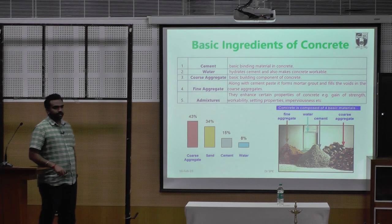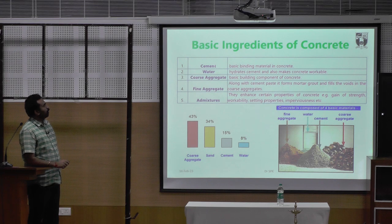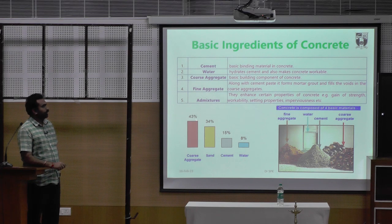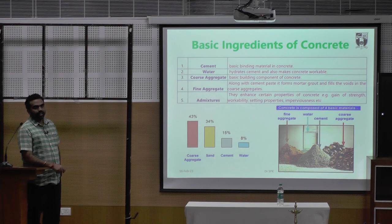The basic ingredients of concrete are cement, water, coarse aggregate, and fine aggregate. The conventional proportions in cement concrete are approximately 43% coarse aggregate, 34% sand, 15% cement, and 8% water.